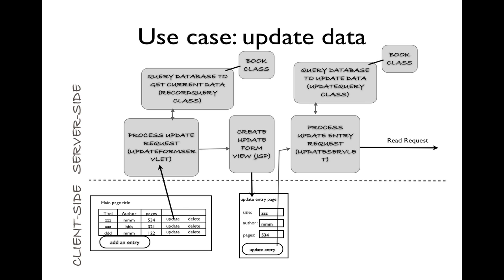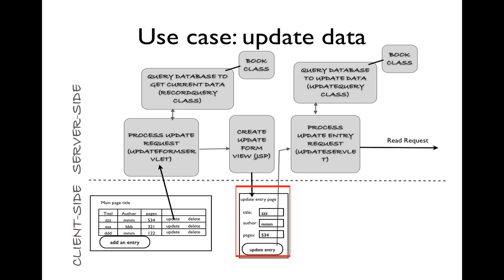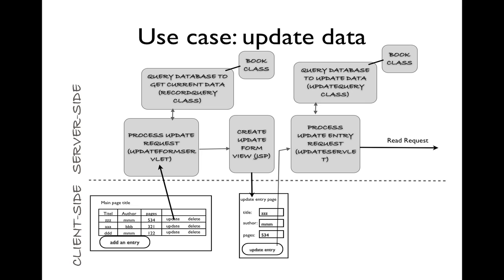The third use case will be the Update Data. Update will be clicked by the client, which will go to the Update Form Servlet. Update Form Servlet will enlist the help of a Record Query class to get the current data for the book selected, using the Book class as needed. When complete, execution will be passed to the Update Form view, showing the Update Entry page. The user can change data and click Update Entry, sending a new request to a Servlet that uses an Update Query to change the data in the database. When the Update Servlet is finished, instead of sending execution to a JSP, we make a read request back to our first use case — a new request to a Servlet instead of to a JSP.